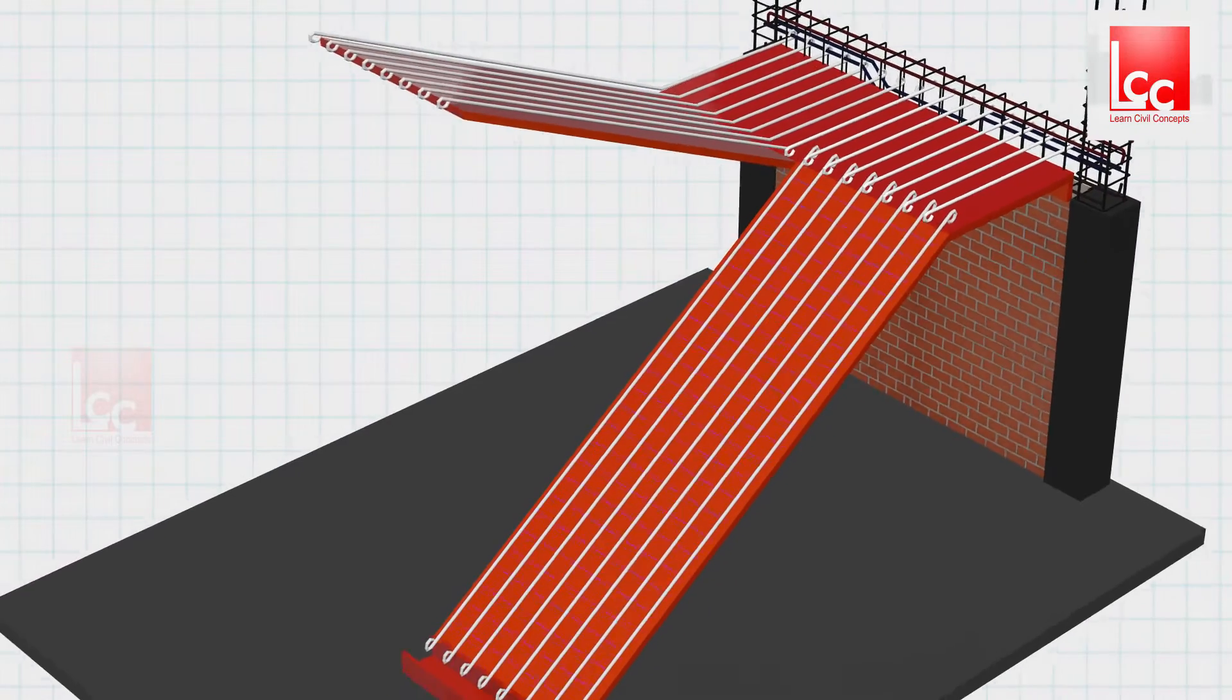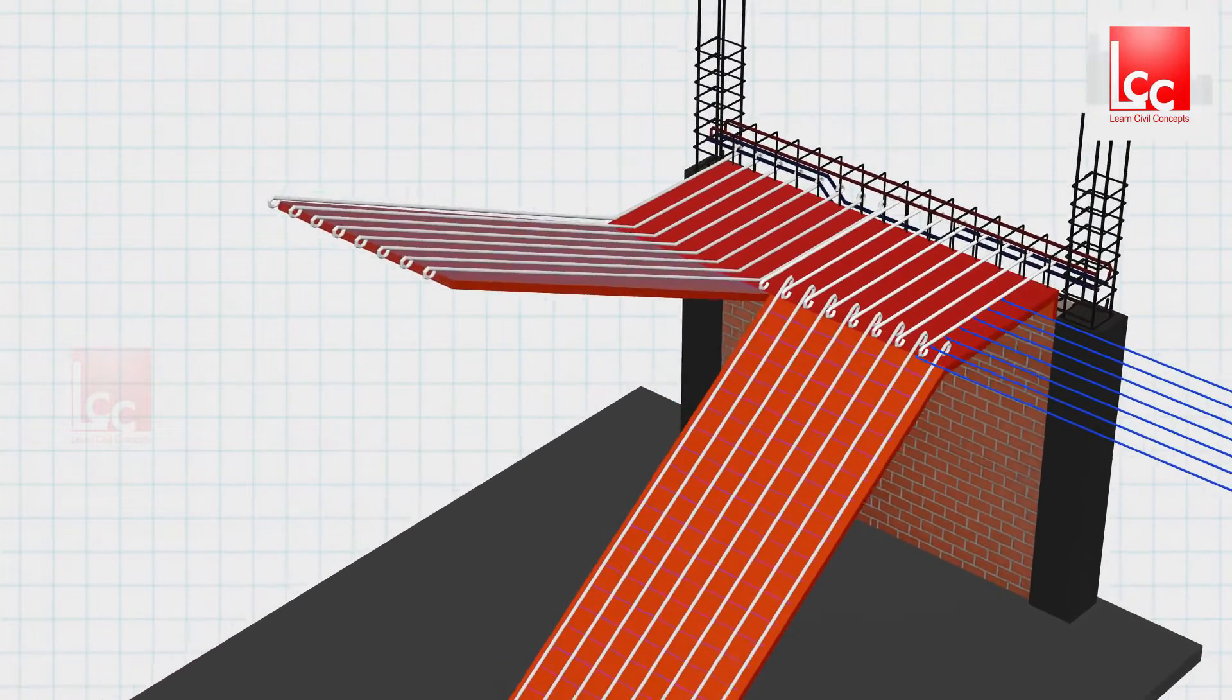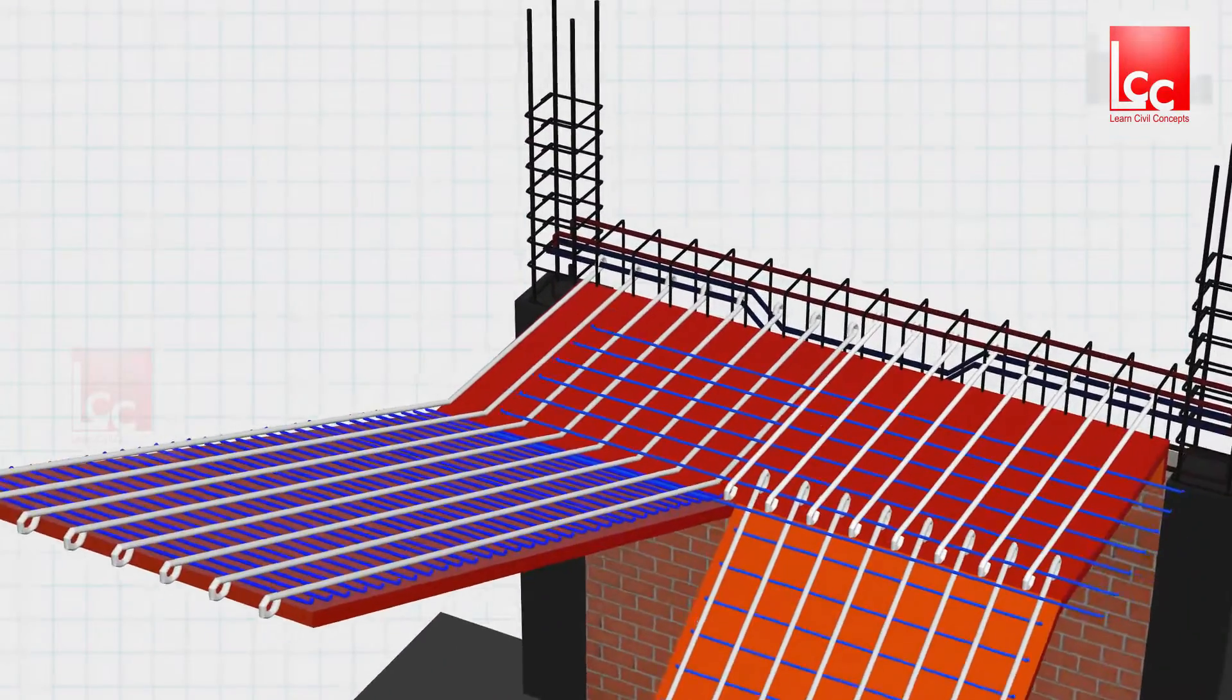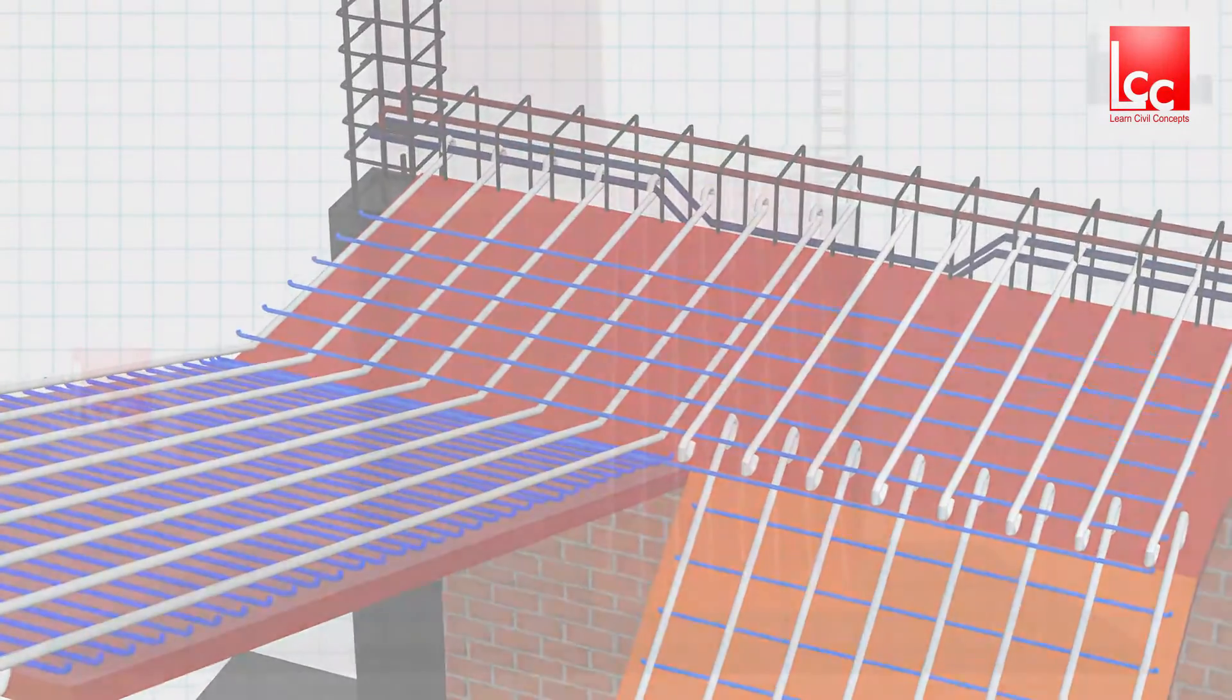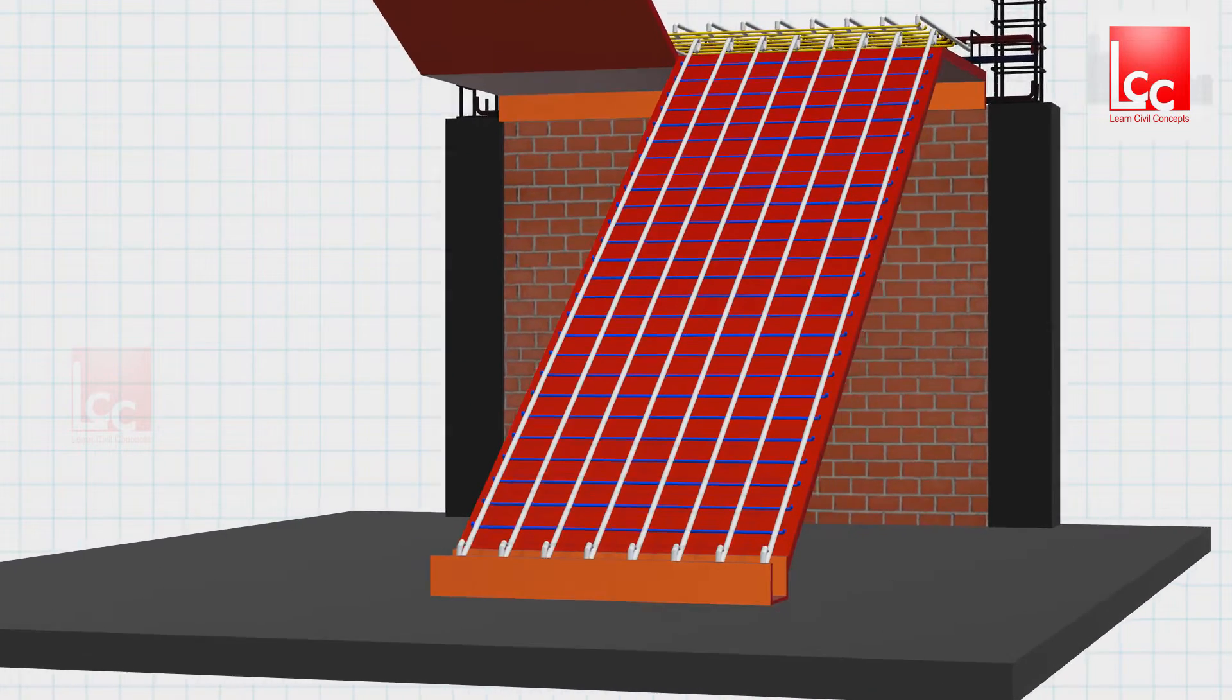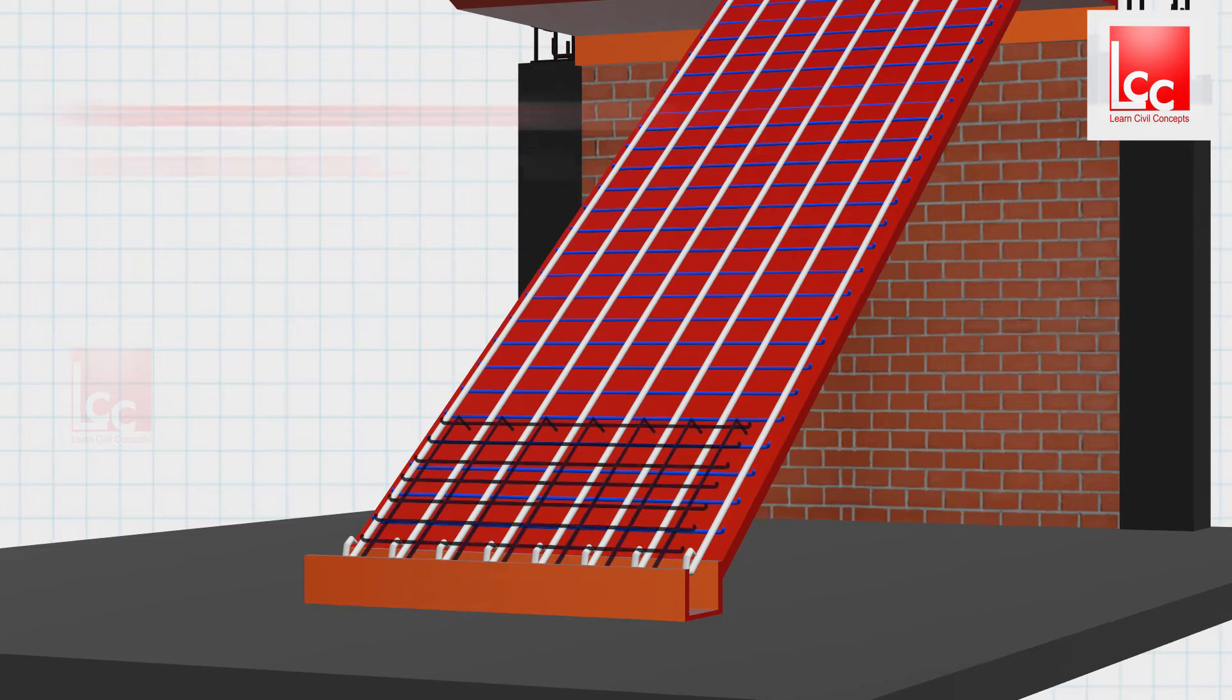The distribution bars will be laid all over the structure as per the drawing. The main bar of diameter 14mm and the distribution bar of diameter 8mm is provided at the bottom.